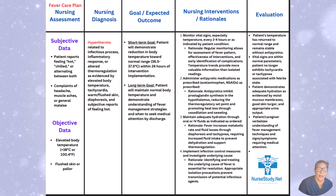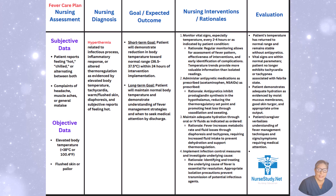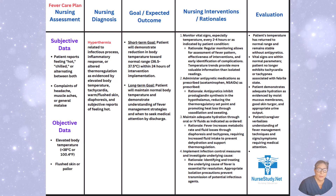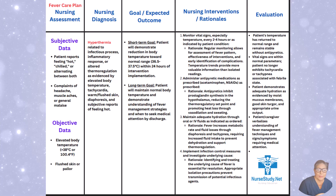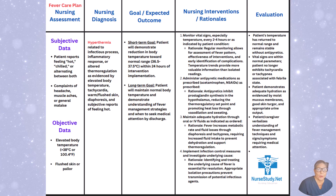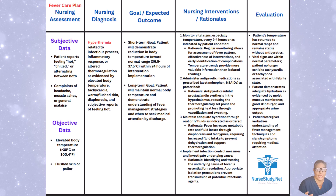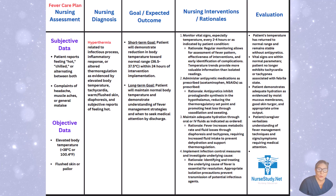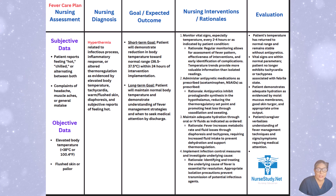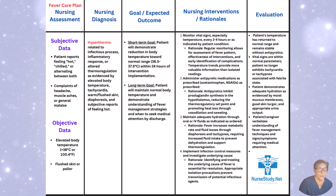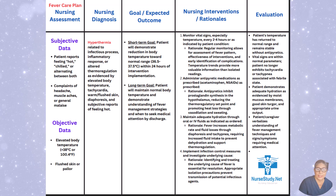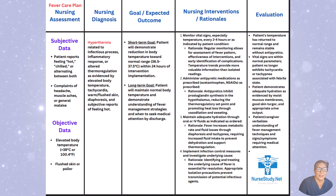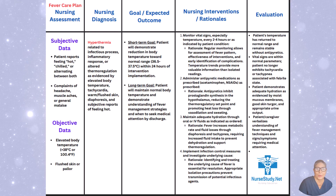Administer antipyretic medications as prescribed, such as acetaminophen (Tylenol) or NSAIDs. Antipyretics inhibit prostaglandin synthesis in the hypothalamus, reducing the thermal regulatory set point and promoting heat loss through vasodilation and sweating. Maintain adequate hydration through oral and IV fluids as indicated and ordered, because fever increases metabolic rate and fluid is lost through diaphoresis and tachypnea (fast breathing), requiring increased intake to prevent dehydration and support thermoregulation.